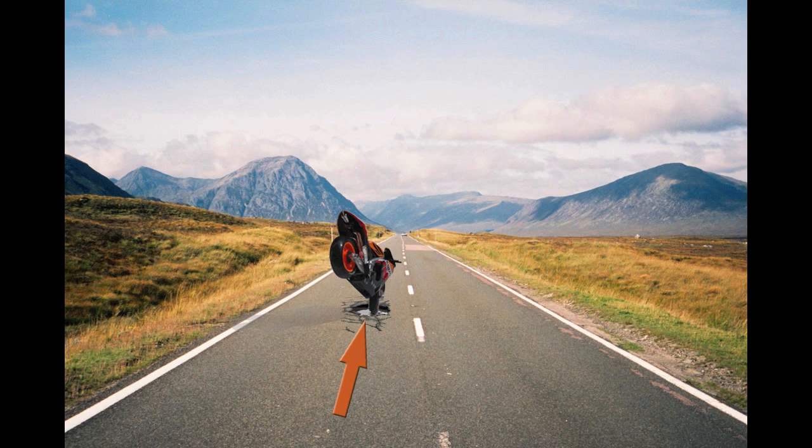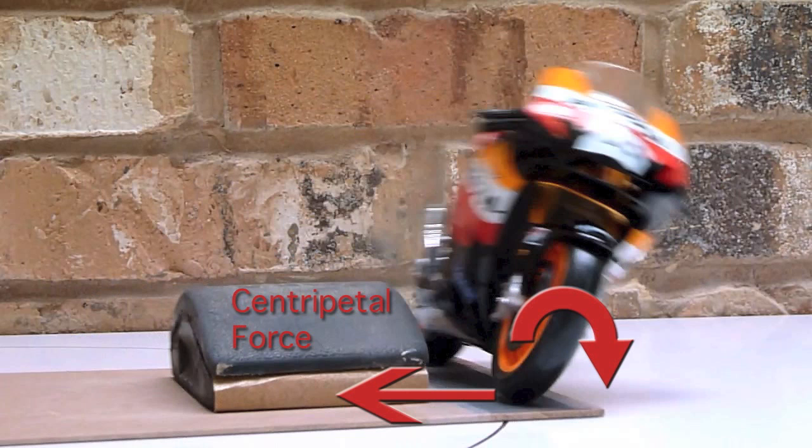But even more serious to your health, remember our first demonstration. If you turn into a corner without leaning over enough, the bike will actually throw you out of the curve.